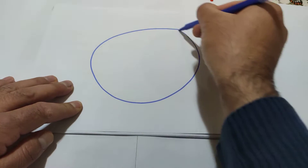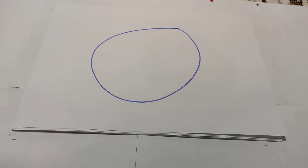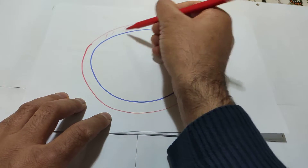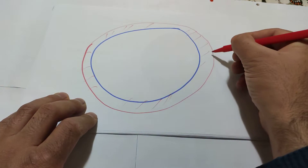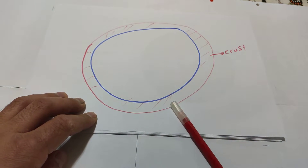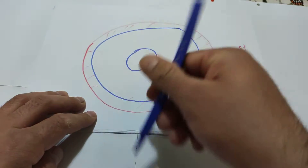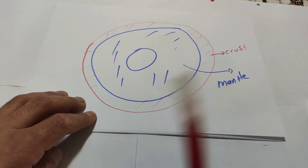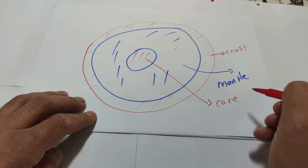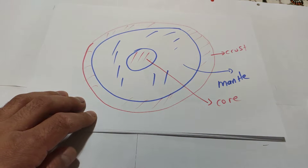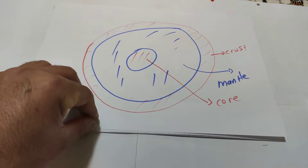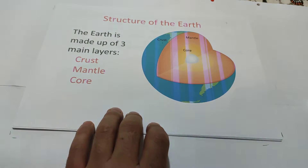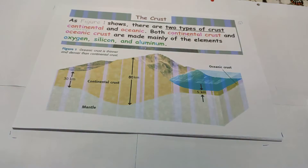Let me draw for you. This is earth. It is made of three layers. The first layer we call crust. The middle layer we call mantle. The center we call core. There are three main layers according to chemical composition: crust, mantle, and core. The crust is the layer which we are living on.